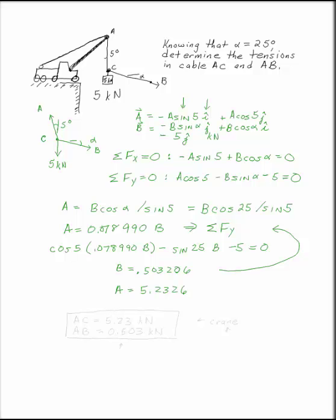Now that you've solved two equations and two unknowns, you can actually go to answer the question. The tensions in the cables, AC is the cable that went from A to C, which we called A. AC is 5.23 kilonewtons. And AB is 0.503 kilonewtons.